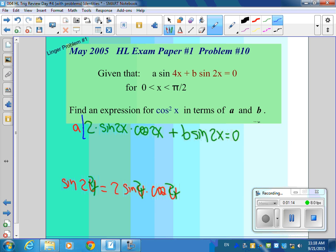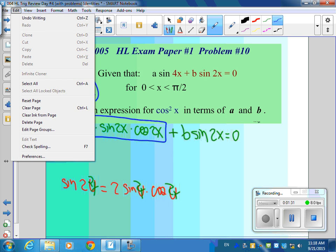Because this is the equivalent to sine 2 times 2x. This is 2 sine 2x times cosine 2x. So what am I going to do with this then? What should I do?